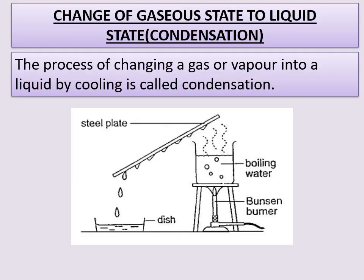The next process is the change from gaseous state to liquid state — condensation. The process of changing a gas or vapor into a liquid by cooling is called condensation. When a gas or vapor is cooled, the kinetic energy of the constituent particles decreases, the particles start moving slowly, and as the temperature is further lowered, the attractive forces pull the particles close together and the gas or water vapor condenses into a liquid.